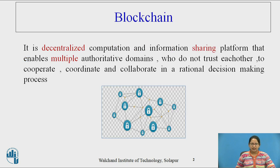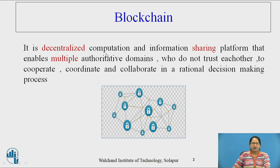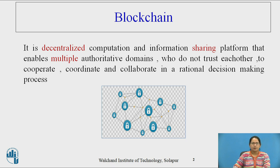As we have already seen what is blockchain and what are the different properties or types of a blockchain, we will revise here in a couple of minutes. Blockchain is a decentralized computation and information sharing platform that enables multiple authoritative domains who do not trust each other to cooperate, coordinate, and collaborate in a rational decision-making process.